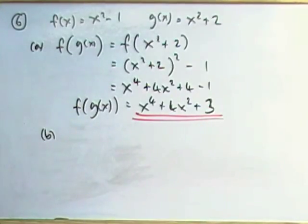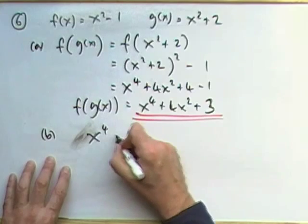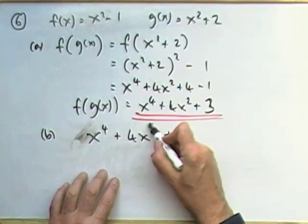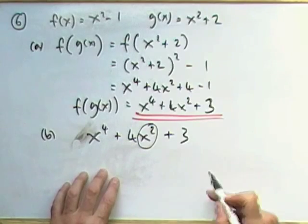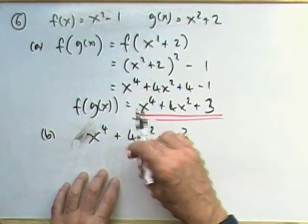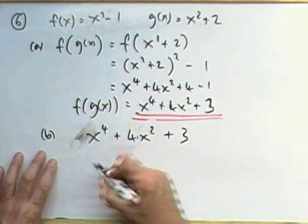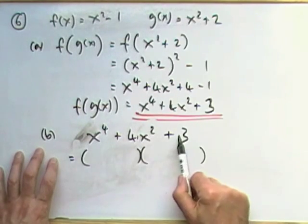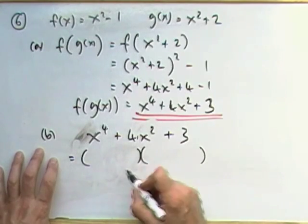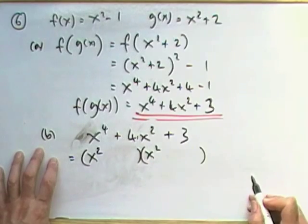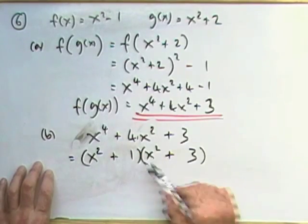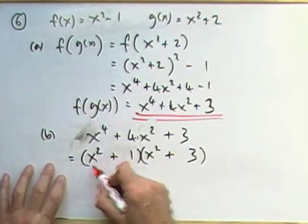Part B: factorise it. x to the 4 plus 4x squared plus 3 is in the form of a quadratic because it's something squared and then a number at the end. Check the discriminant: 4 squared is 16, take away 12 is 4. Perfect square, it'll factorise. It must be x squared times x squared to give x to the 4, 1 times 3 to give 3, and they're all positive. So it's (x squared plus 1)(x squared plus 3). Question 6 done.